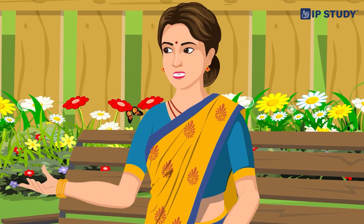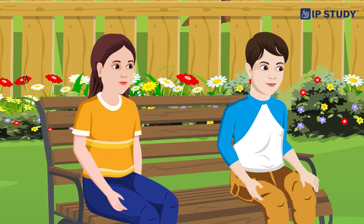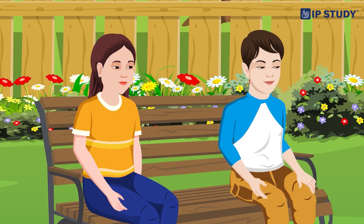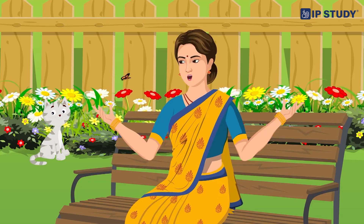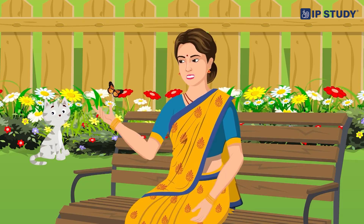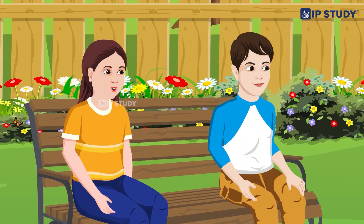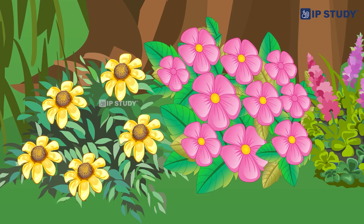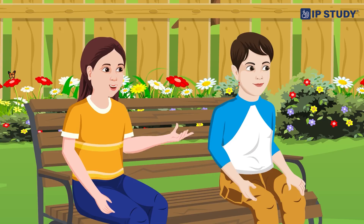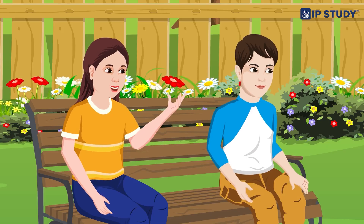Zero means nothing, or the absence of quantity. Let's count these flowers in a special way — we will make groups of ten. I see a bunch together: one, two, three, four, five, six, seven, eight, nine, ten. I made a group of ten!